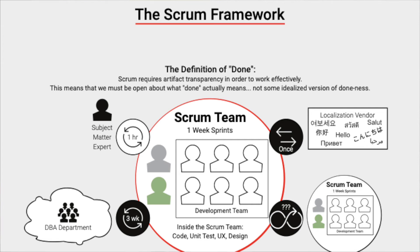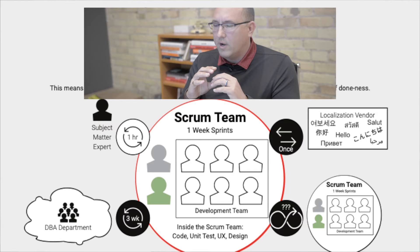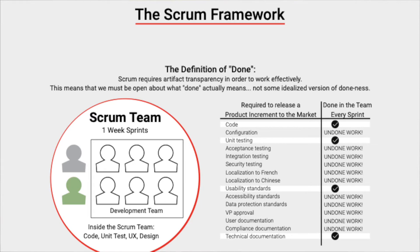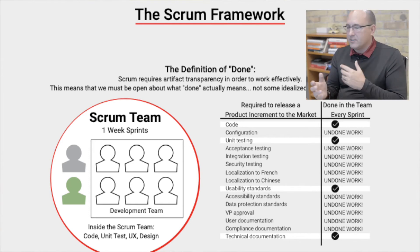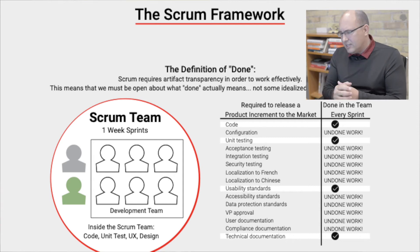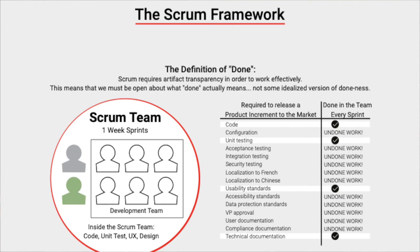So how does this relate to the Definition of Done? The Definition of Done refers to what is within the Scrum team. We can illustrate it as a checklist of all the things required to release a product increment to the market — in software, things like code, configuration, unit testing, acceptance testing, localization, compliance, and documentation. Within the Scrum team, they're doing coding, unit testing, usability standards, and technical documentation, but all the other stuff isn't getting done within the team every sprint. We sometimes call that 'undone' work — it is not part of the Definition of Done.